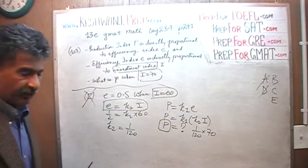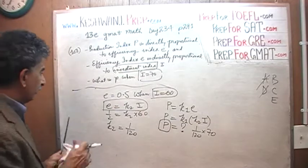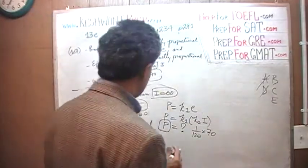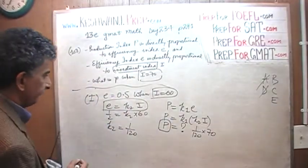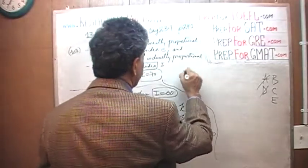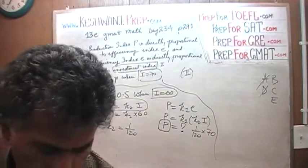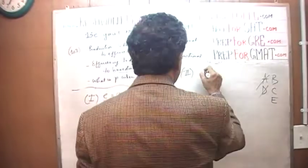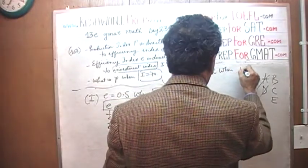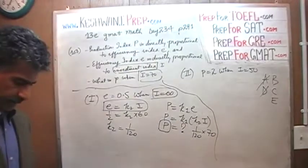To the second statement, shall we? First statement was no good. When I say no good, it doesn't mean that it's absolutely no good, it's not sufficient by itself. Let's look at the second statement. In the second statement, they tell us that P equals 2 when I equals 50.